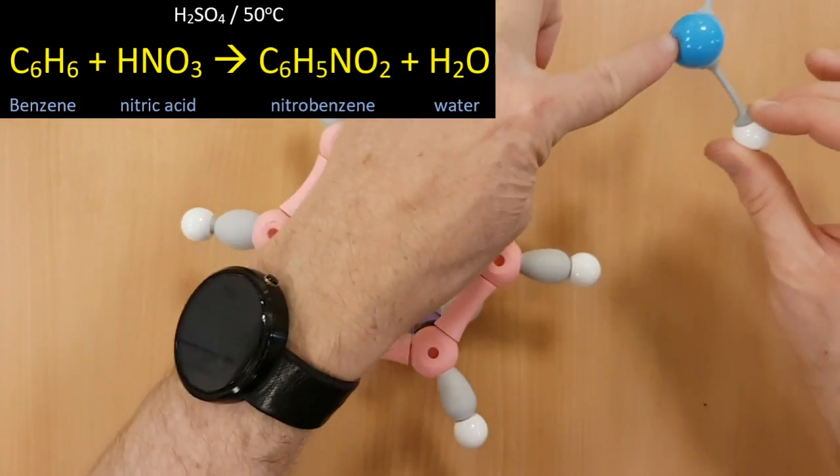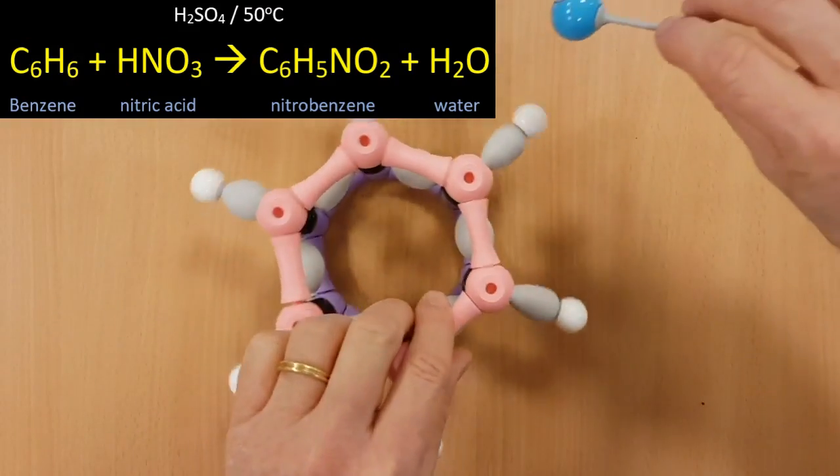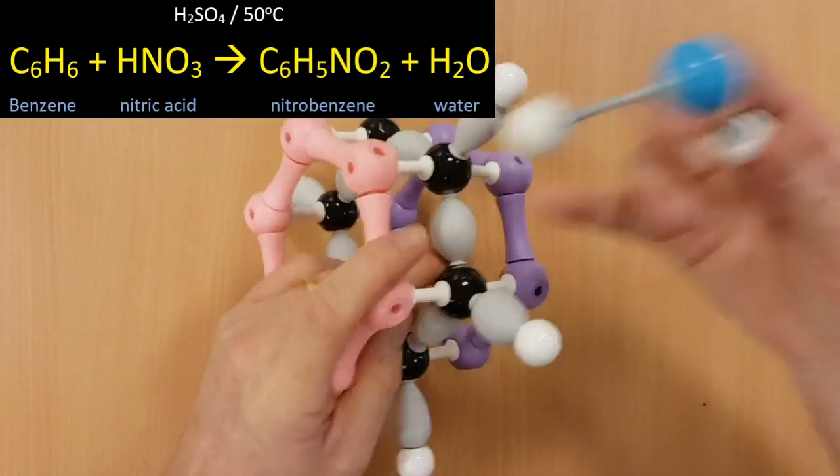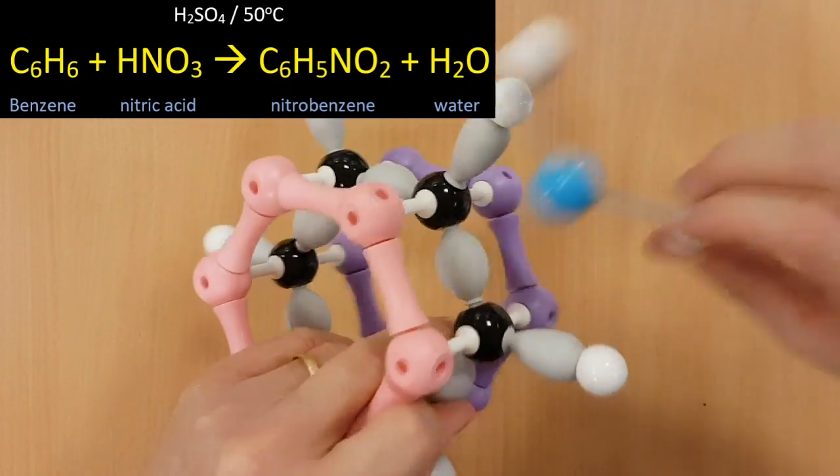But this NO2+ loves electrons. It's an electrophile. It comes on in and it can't break the ring. Remember the ring between the carbons here is very stable. It can't break that.